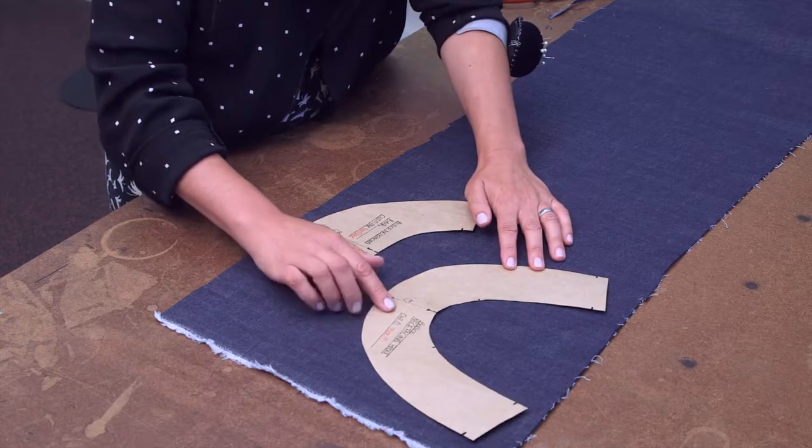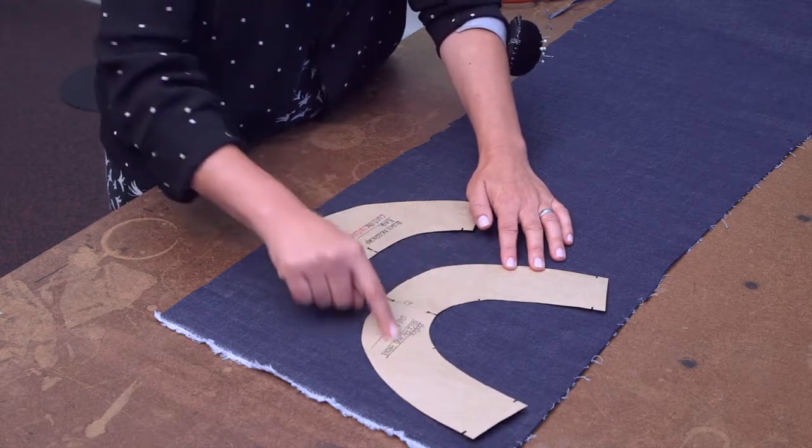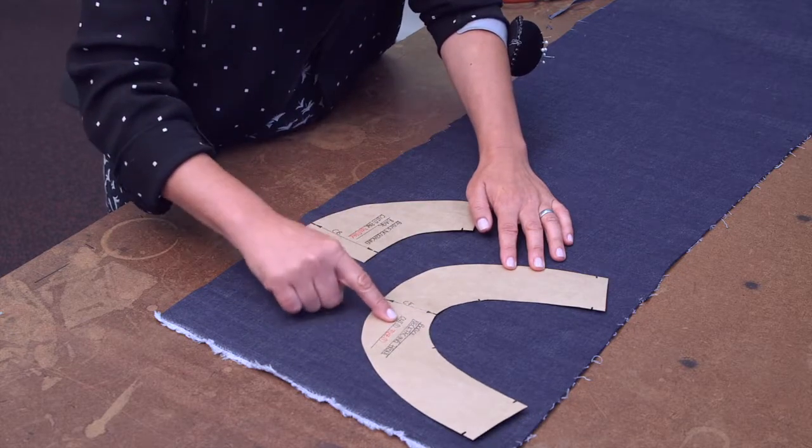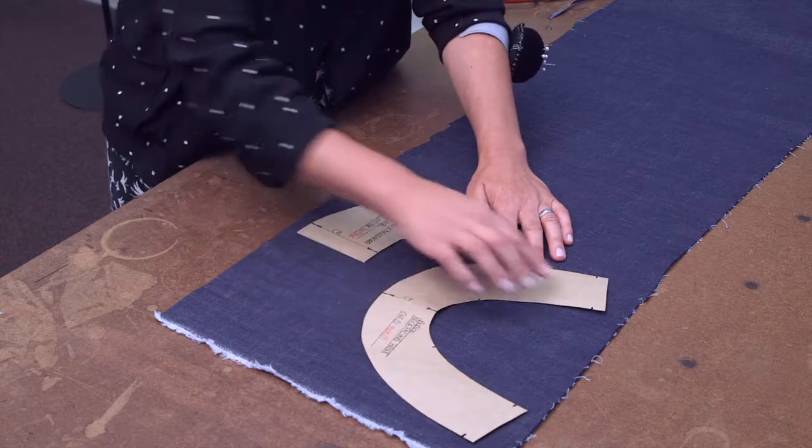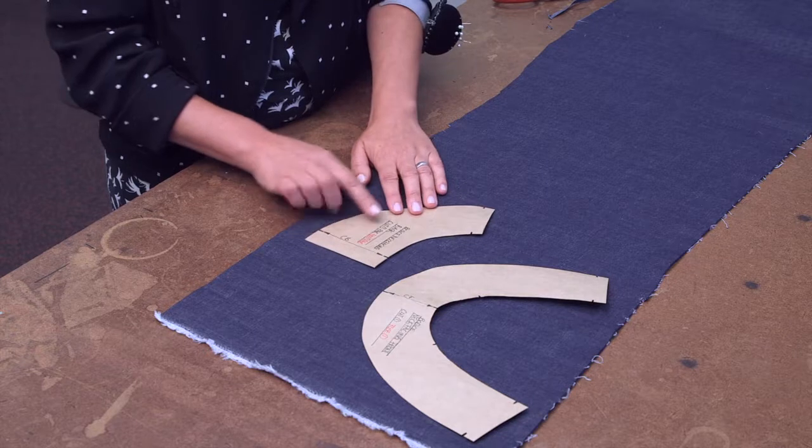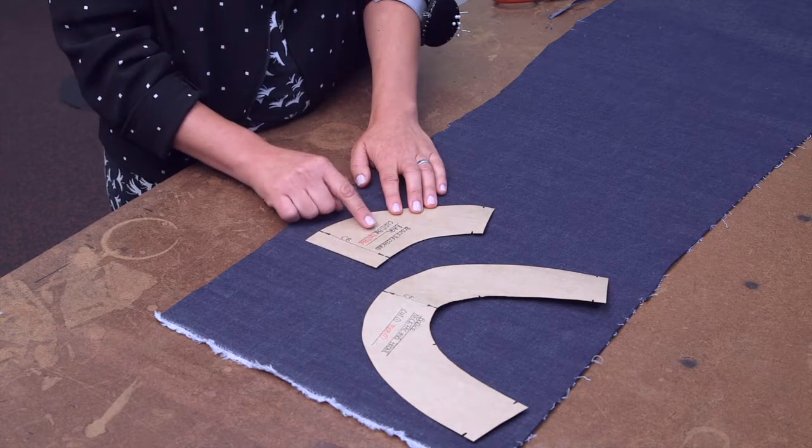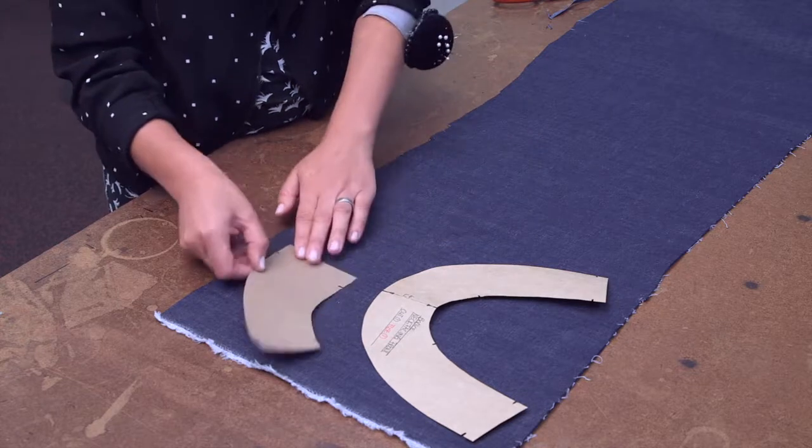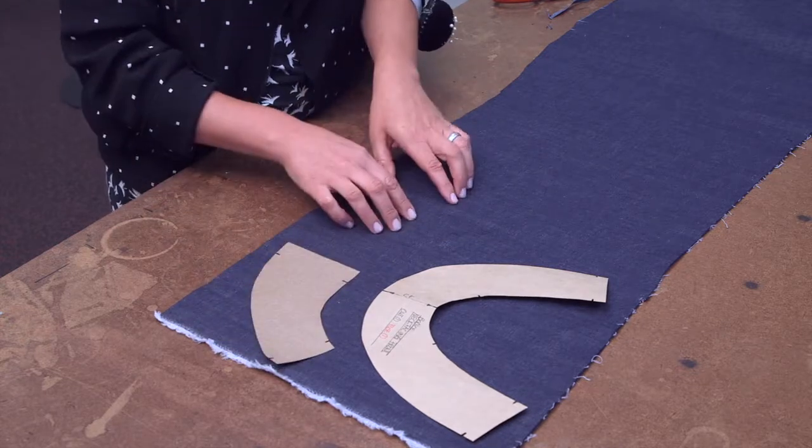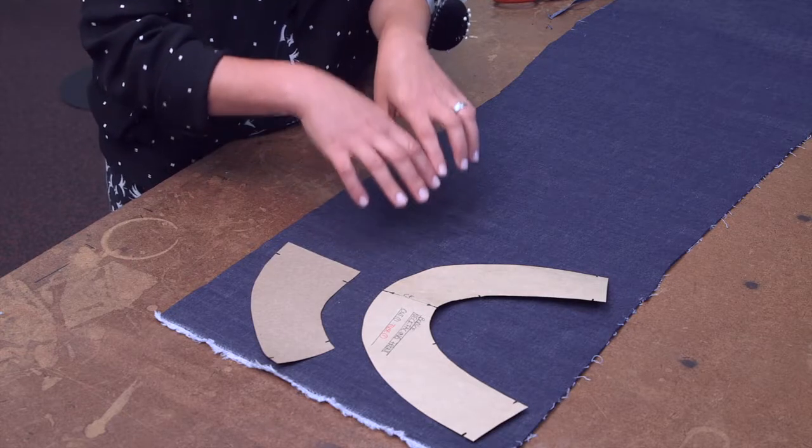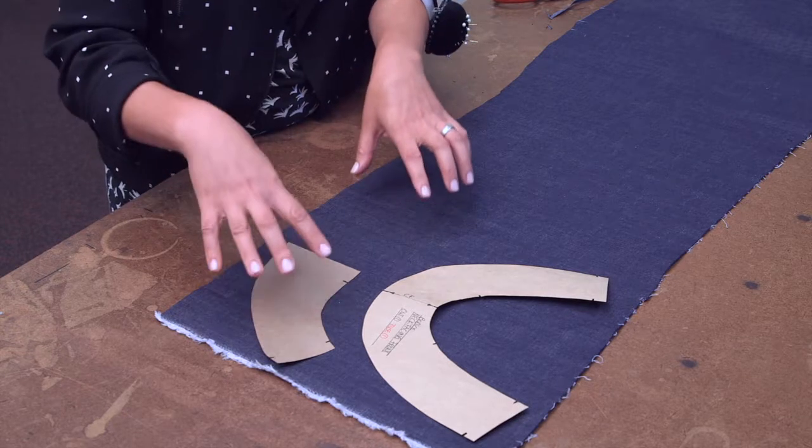On your pattern, it will tell you cut one - in this case it's your front neck facing along your neck. It says cut one, fuse one. It just means that the one that you cut is also fused. On your back facing, however, it says cut one pair, fuse one pair. It does not mean that you have to cut two separate pieces. You're cutting one pair of the fabric, but that fabric piece is also fused.